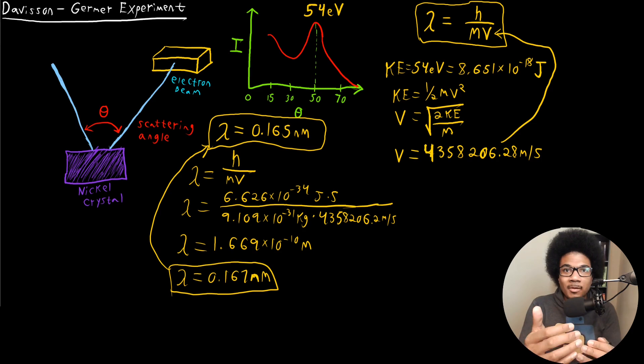Every particle behaves like a wave, just as the photoelectric effect showed us that every wave can behave like a particle. So this really completes both sides of the wave-particle duality, the wave-like behavior of particles and the particle-like behavior of waves. So this really kind of ties that in.